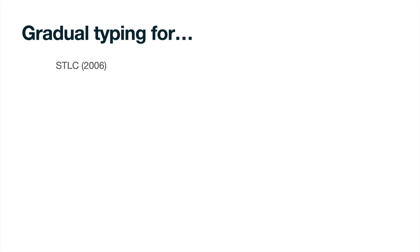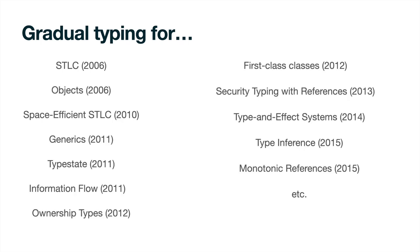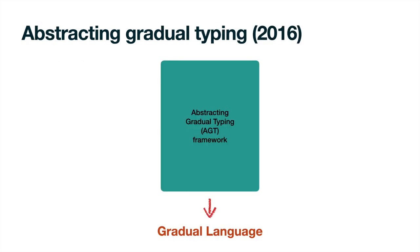Since its original inception for simple types, multiple efforts to gradualize statically typed languages have come to fruition, requiring increasingly complex insights and justifications from designers. Abstracting gradual typing, or AGT for short, is a framework intended to reduce and focalize the dependency upon intuition in the design of a gradual language.